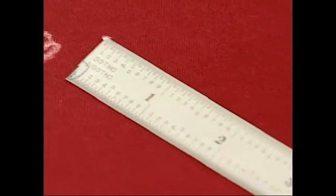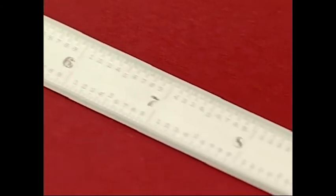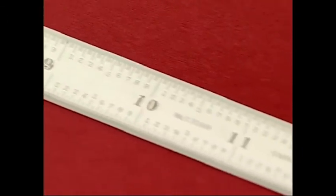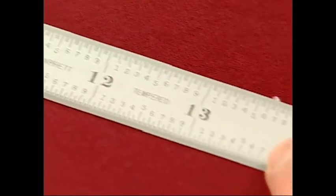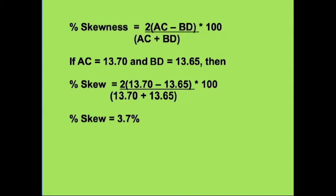The diagonals AC and BD are used in a formula that expresses sheer distortion of a plane. The value is expressed to the nearest 0.1 percent, as follows. The difference between the diagonals is multiplied by a factor of two and then divided by the sum of the diagonals. This number is multiplied by 100 to give the percentage of skewness.